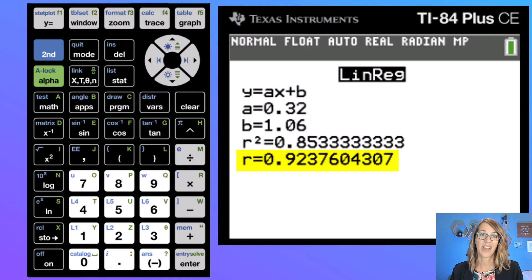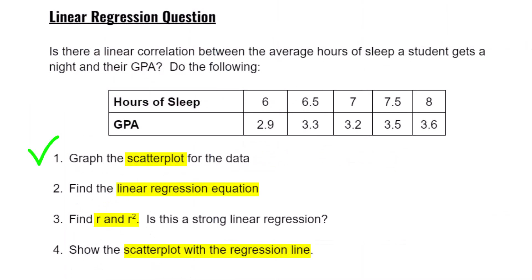which takes care of both questions number two and number three, and finally we just want to get that regression equation on our scatter plot. Now I want to show you what happened when we saved that regression equation in y1.